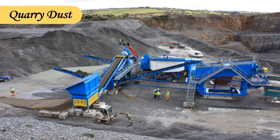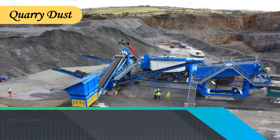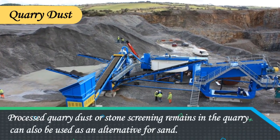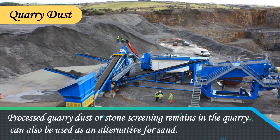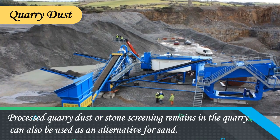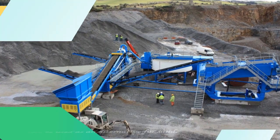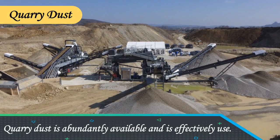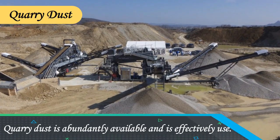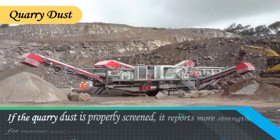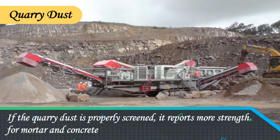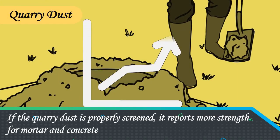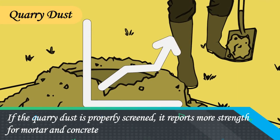Quarry Dust. Processed quarry dust or stone screening remains from the quarry can also be used as an alternative for sand. Quarry dust is abundantly available and effectively used. If the quarry dust is properly screened, it provides more strength for mortar and concrete.